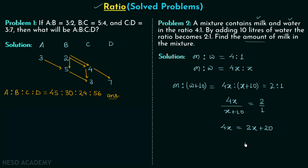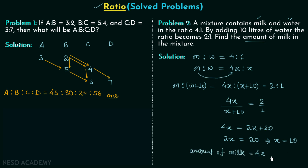Subtracting 2x from both sides gives 2x = 20, and dividing both sides by 2 gives x = 10. The amount of milk is 4x = 4 × 10 = 40 liters. This shows why including the common factor is very important when working with ratios.